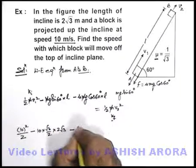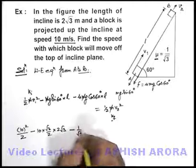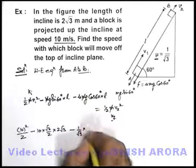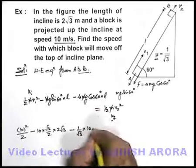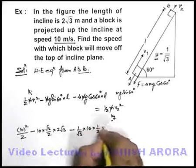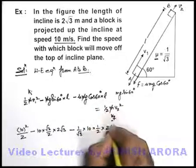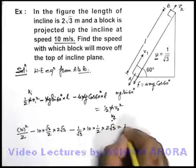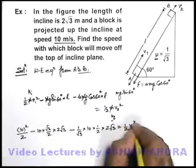Minus μ we can take, it is given as 1 by √3, multiplied by g we can take 10, cos 60 will be 1 by 2, and length of incline is 2√3 is equal to half of v2 square.